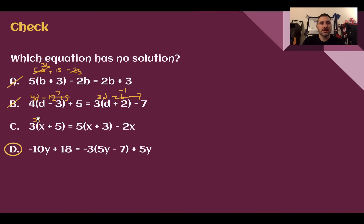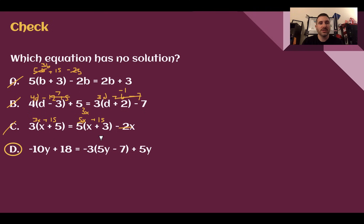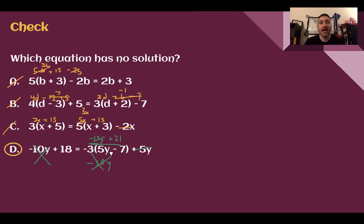For C: 3x plus 15 equals 5x plus 15 minus 2x simplifies to 3x plus 15 equals 3x plus 15. Subtracting 3x gives 15 equals 15 — that's true, so that's infinite solutions, not what we want. For D: distributing negative 3 times 5 is negative 15y, negative 3 times negative 7 is plus 21. Negative 15y plus 5y is negative 10y. So I have negative 10y plus 18 equals negative 10y plus 21. Adding 10y to both sides cancels it, leaving 18 equals 21 — not true. That's my no solution.